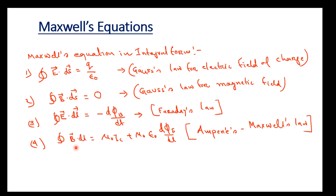The fourth one is ∮B·dl = μ₀Ic + μ₀ε₀ dΦE/dt. This is the modified Ampere circuital law, or we can call it the Ampere-Maxwell law. These 4 laws totally describe the whole electrodynamics or electromagnetic system.